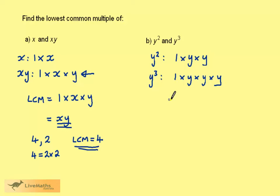If we start with the y cubed, the lowest common multiple will be 1 times y times y times y. And if we now look at the y squared, we have everything already here. So the lowest common multiple is going to be y cubed.